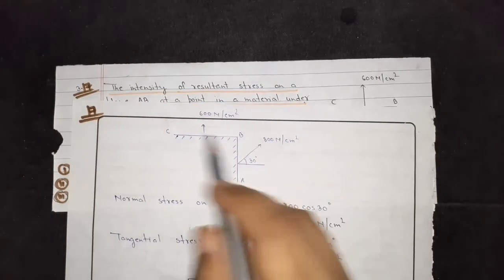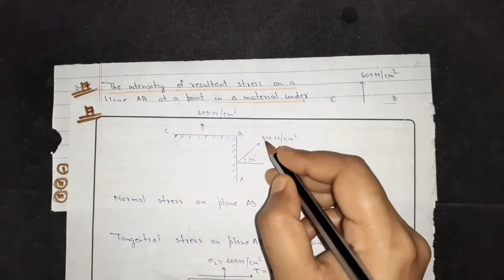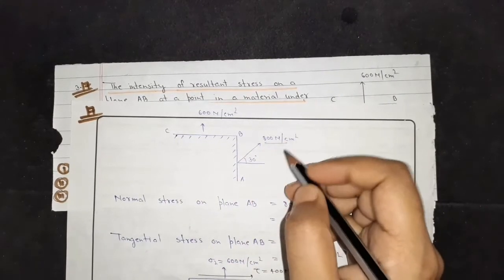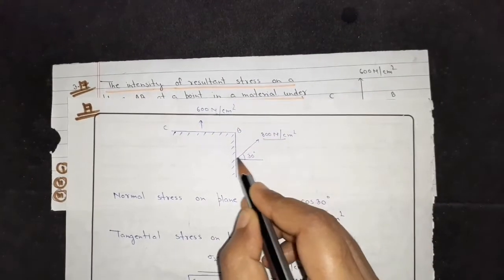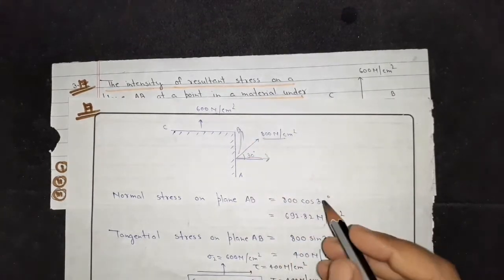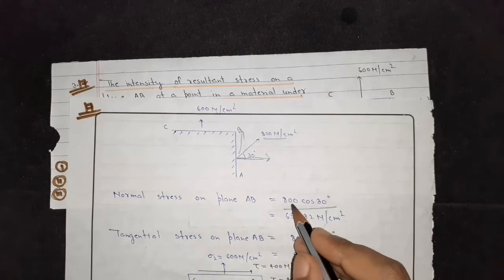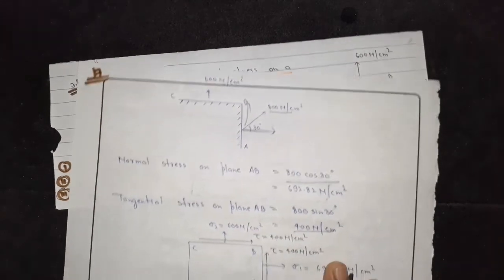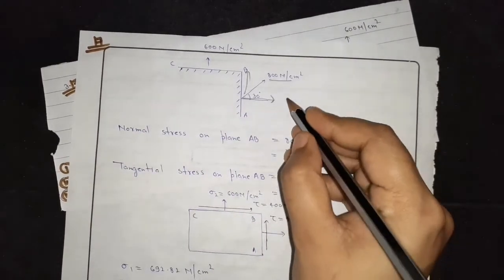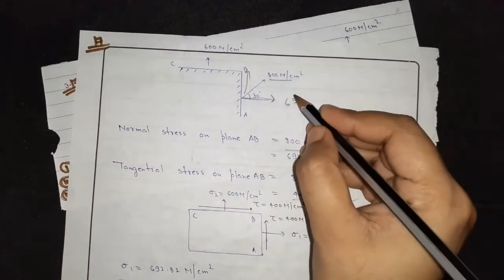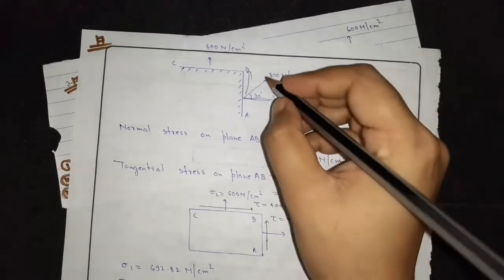Let's solve our numerical. We have two planes, AB and BC. The resultant stress is 800 N per centimeter square. First, we will find normal and shear stress. The normal stress is 800 cos 30, which gives 692.82 N per centimeter square. And the value of tau (shear stress) is 400.